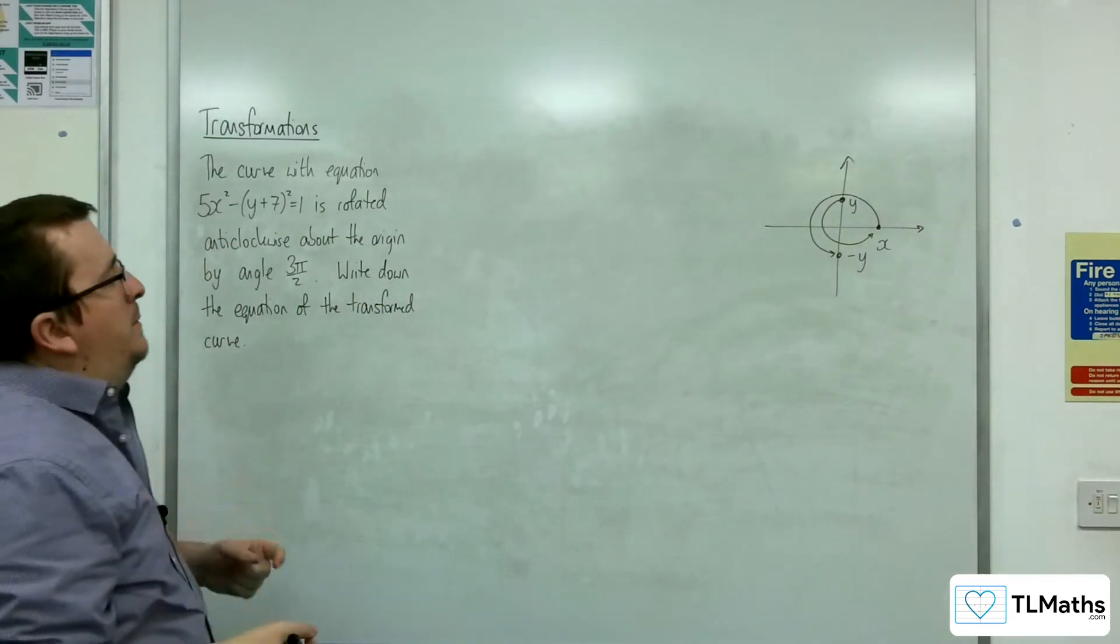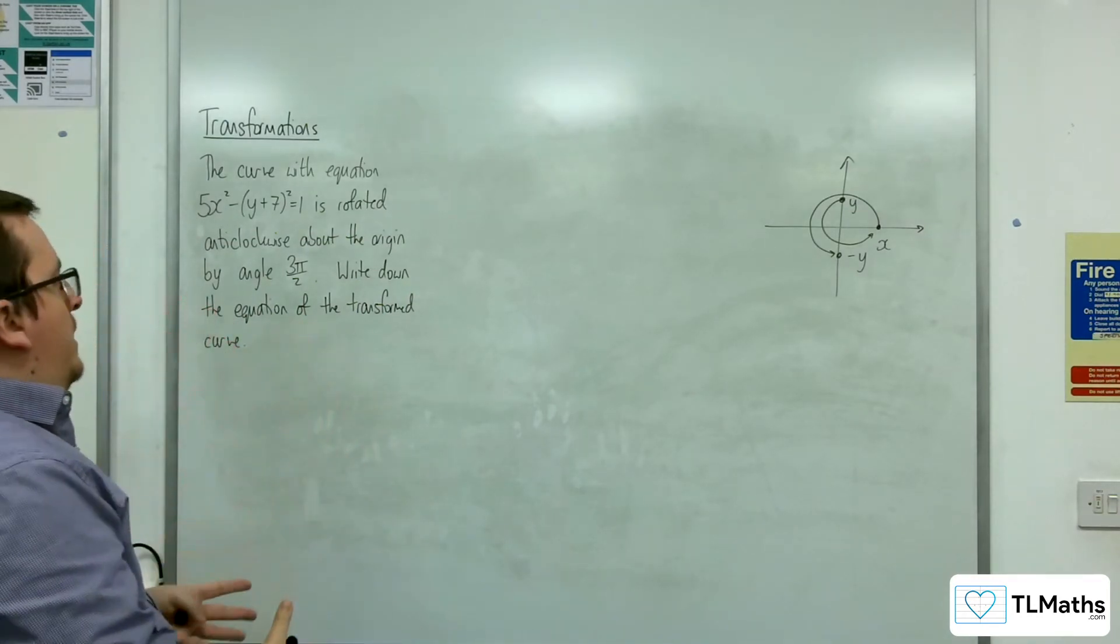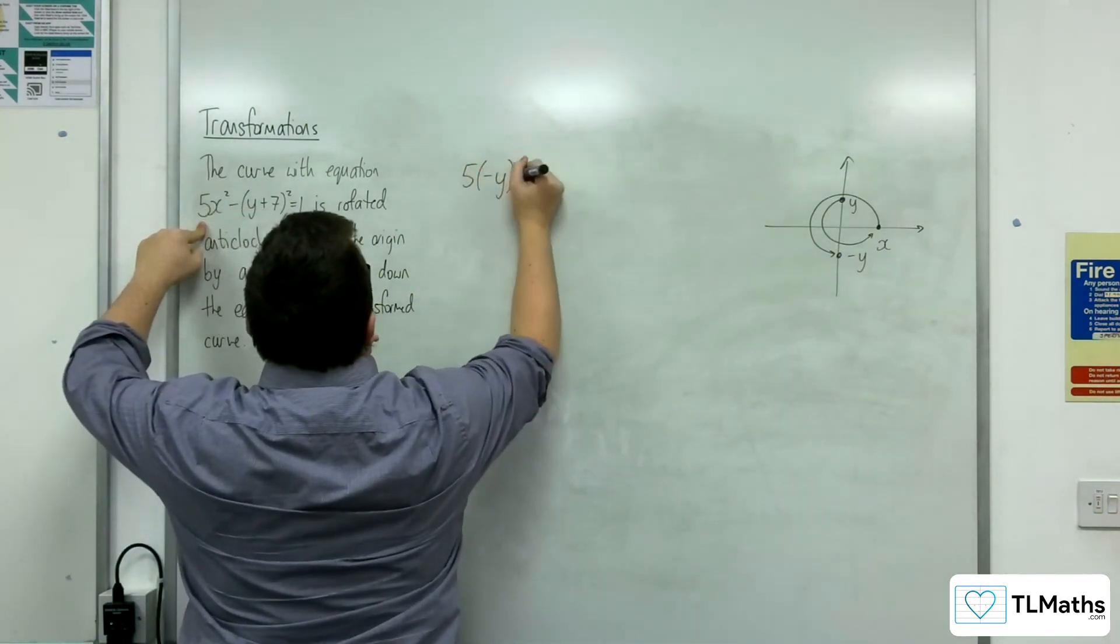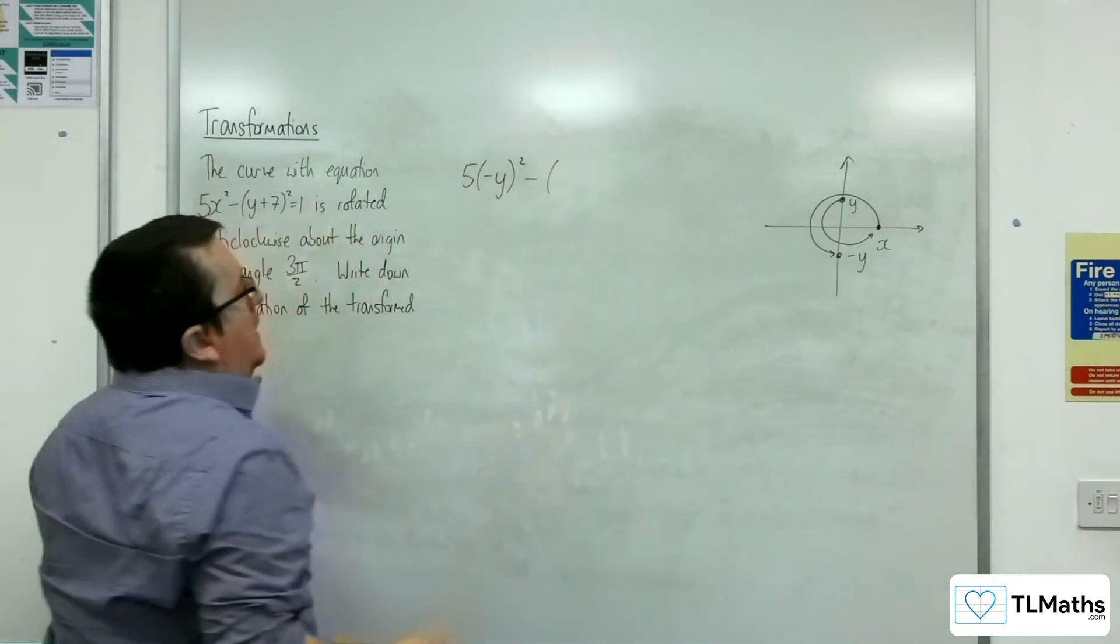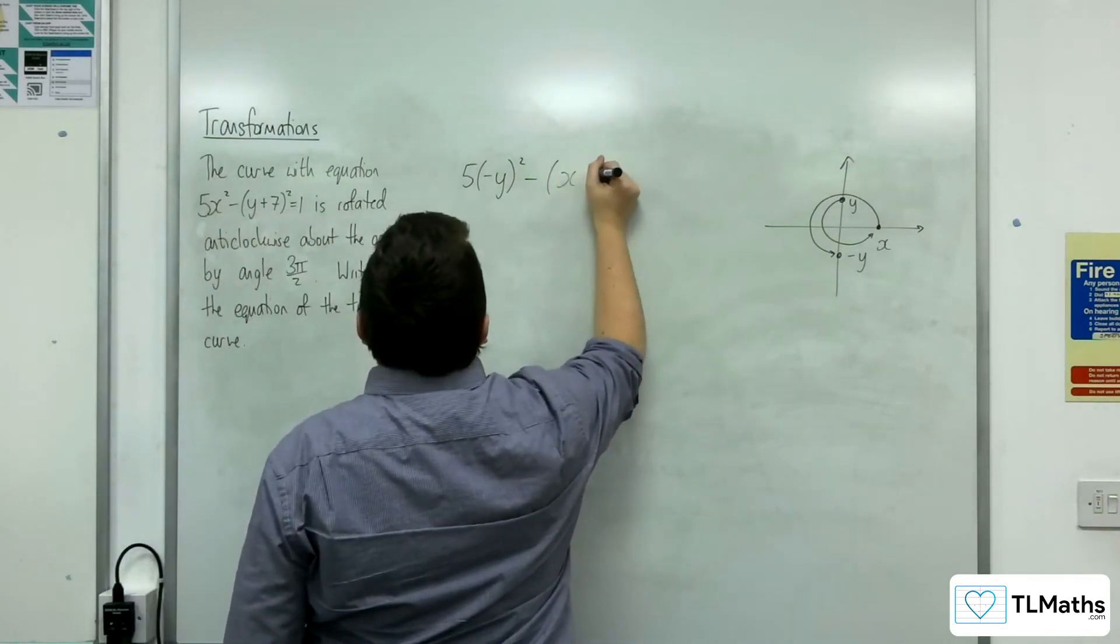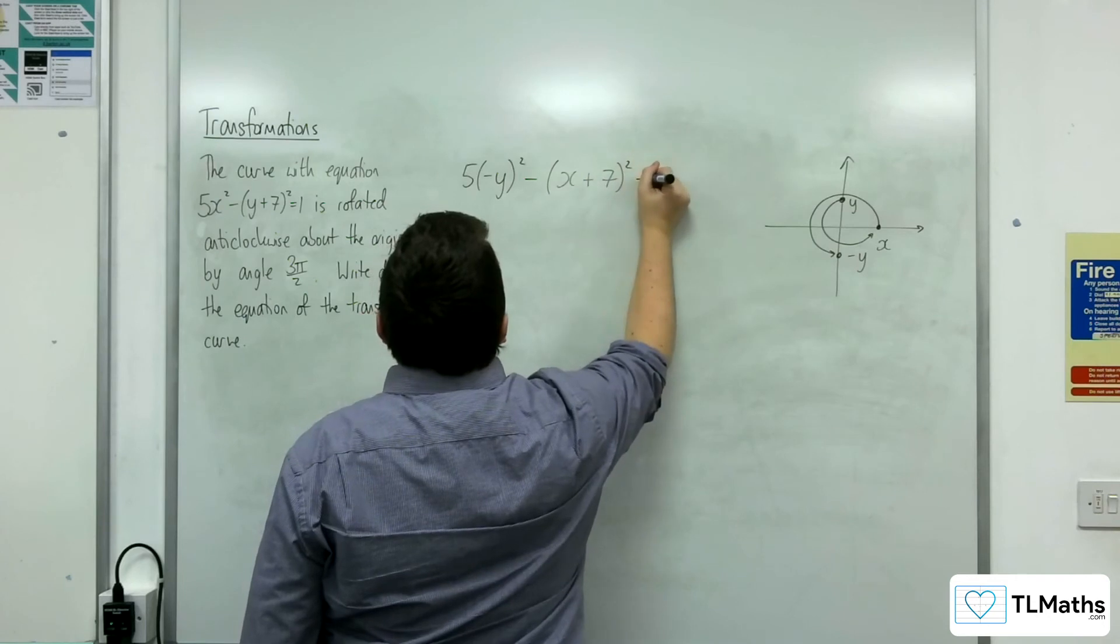Okay, so I'm going to replace the x's with minus y. So I would have 5 lots of minus y squared take away, and the y is being replaced with x, so you just have x plus 7 squared equals 1.